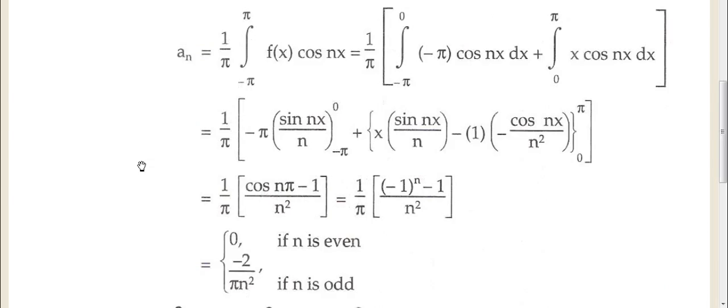Now an, an equals 1 upon pi, minus pi to pi, f(x) cos nx dx, standard Fourier equation. So input the values minus pi to 0 first, then 0 to pi, because two functions.